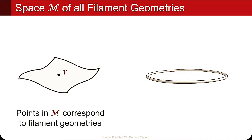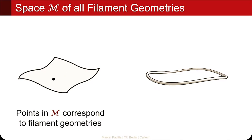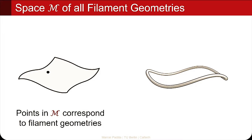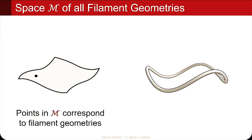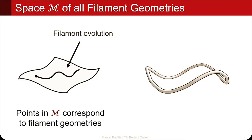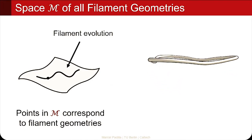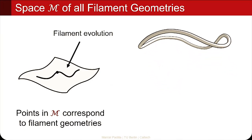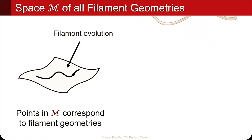If I carefully and slowly move the point along the manifold, I smoothly deform the curve, because this is a smooth transition on this manifold. The filament dynamics that we want to describe has to be a path in this manifold, and we want to be able to describe this path. The equations of motion that we are seeking are exactly the ones describing this path.